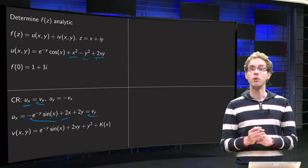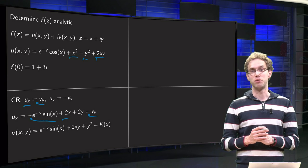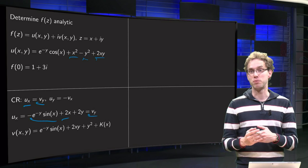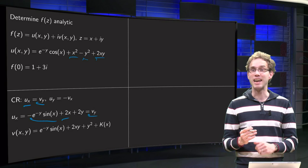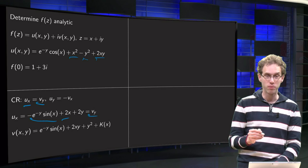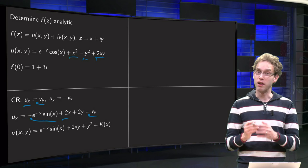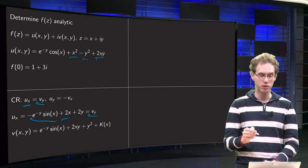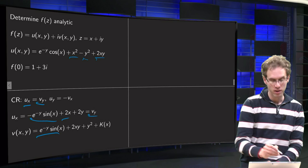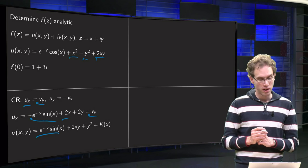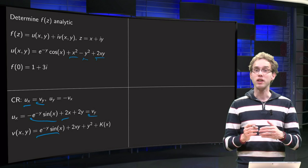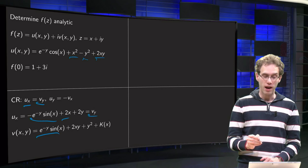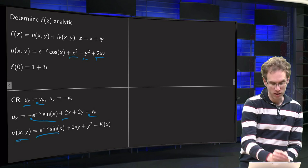To find v, we integrate with respect to y, keeping in mind it is a partial derivative — so we integrate with respect to y while treating x as a constant. Integrating the first term: e to the power minus y times sine x, where sine x is a constant, integrating with respect to y gives e to the power minus y times sine x. Integrating 2x yields 2xy. Integrating 2y yields y squared. So there we have our v of x and y.